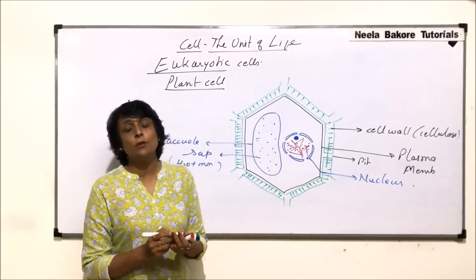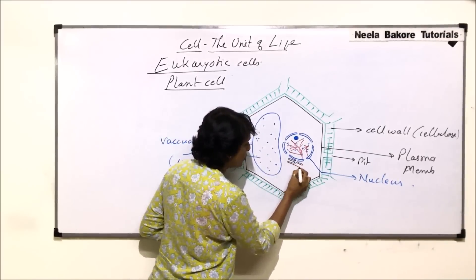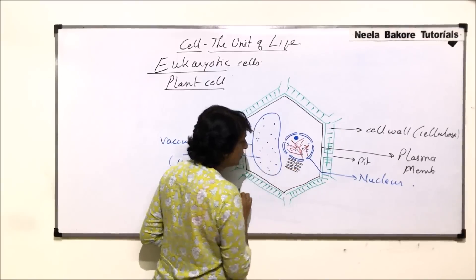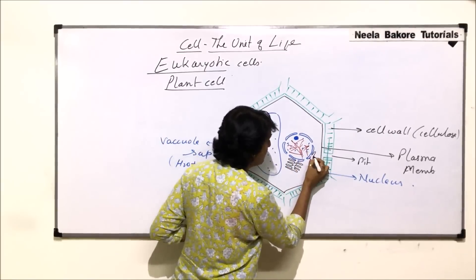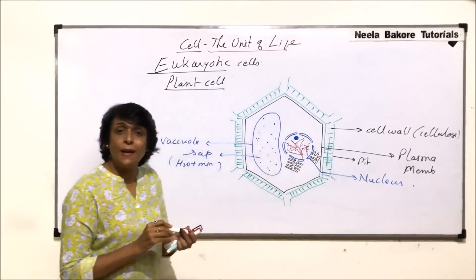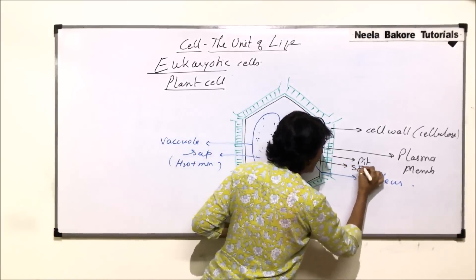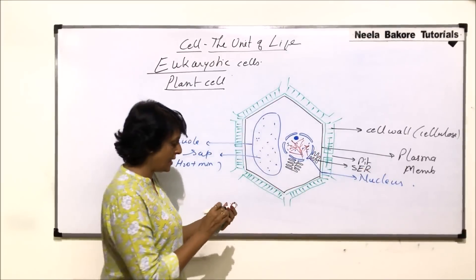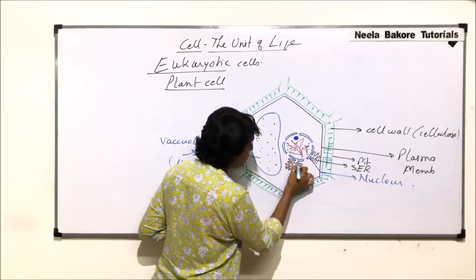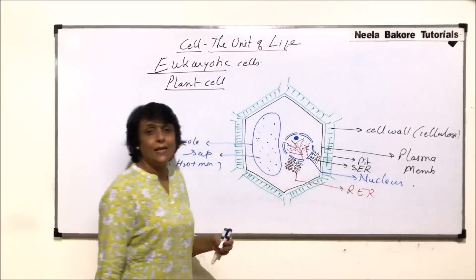We will draw two endoplasmic reticulums. One has ribosomes attached on it — that is called the rough endoplasmic reticulum, or RER. The other one is without ribosomes — that is the smooth endoplasmic reticulum, or SER. Both endoplasmic reticulums arise from the nuclear membrane.